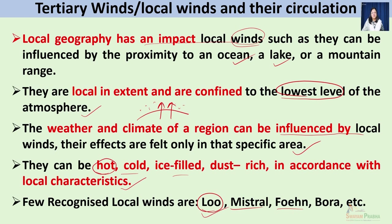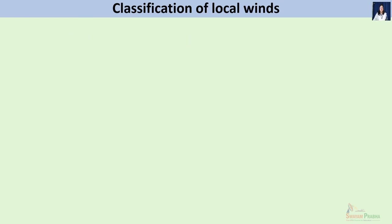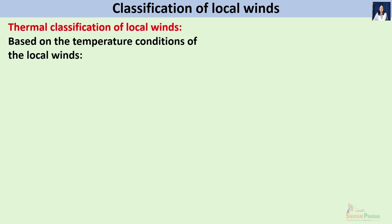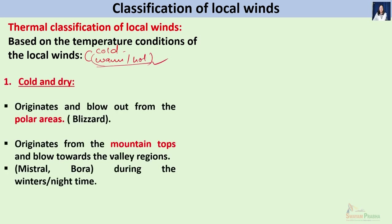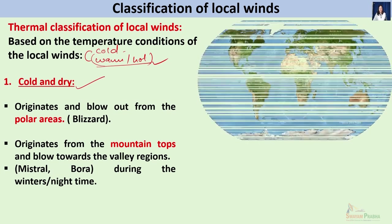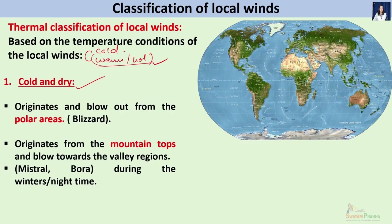Local winds can be classified based on various factors — by region or by temperature conditions. Based on thermal classification, local winds can be cold or warm and hot. The first type under thermal classification is the cold and dry local wind. As the name suggests, these winds are cold and dry in nature, and they generally originate from two types of regions: polar areas covered under ice for most of the year, and mountain tops.